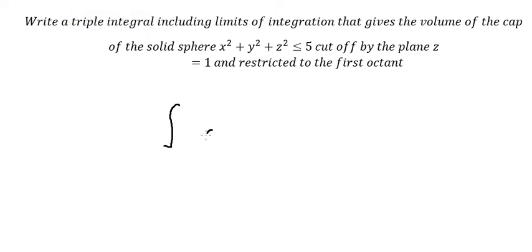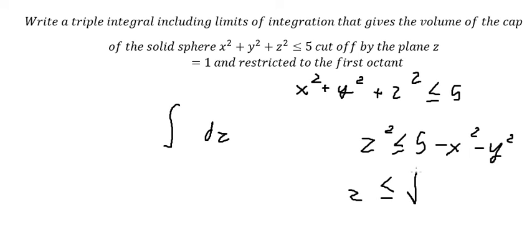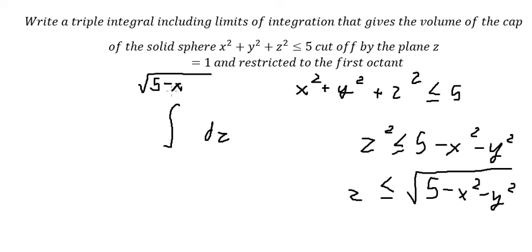For dz, we know the solid is on the positive side because it is cut off by z equal to one and below the surface. We put the square root for both sides and choose the positive value. So the top bound for z is the square root of five minus x squared minus y squared, and the bottom is one.